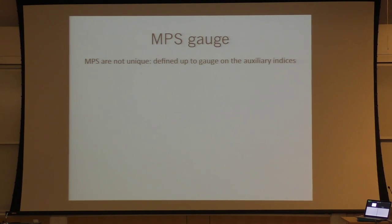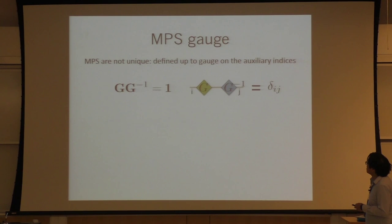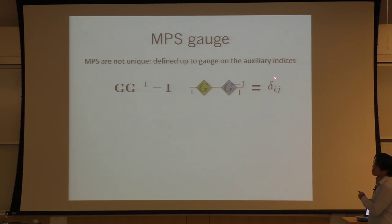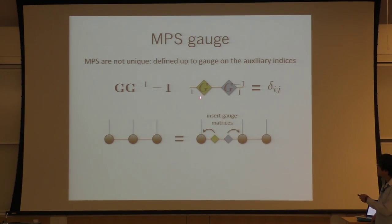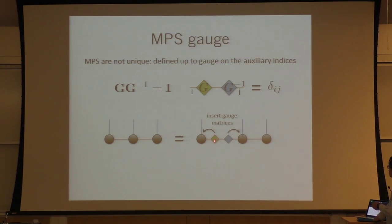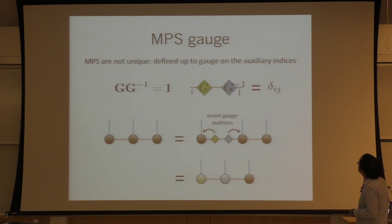I can group the G matrix, multiply it onto the left tensor and G⁻¹ onto the right tensor, and obtain a different matrix product state representation of the same state. That's the gauge degree of freedom. From now on I'm really just going to use these pictures — hopefully this is clear, but please stop me if not.